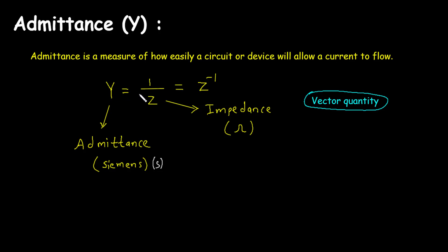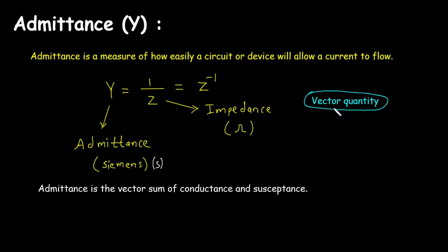Admittance is a vector quantity. Admittance is the vector sum of conductance and susceptance. Let's understand what is meant by the vector sum of conductance and susceptance.